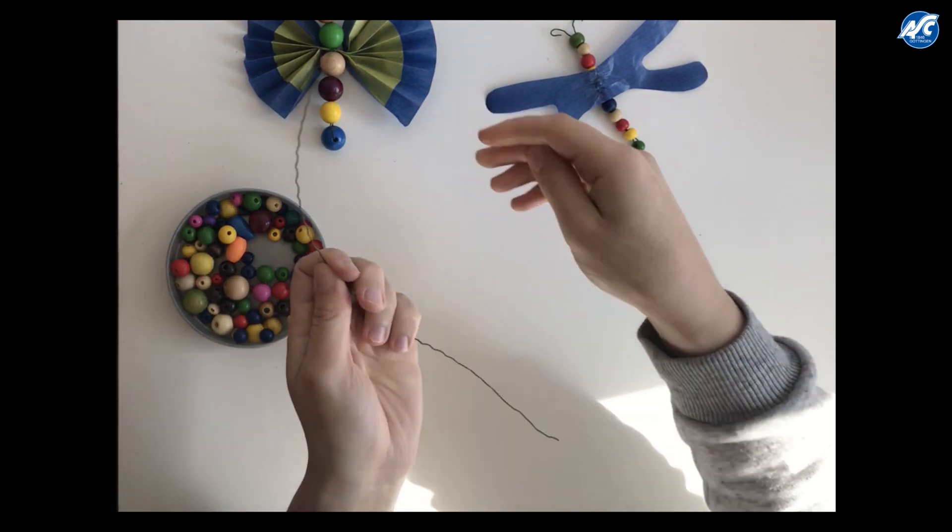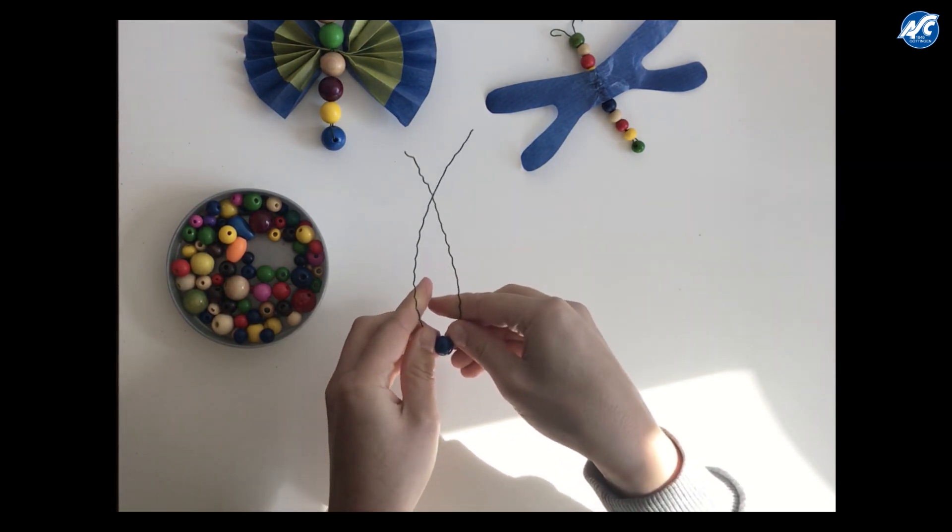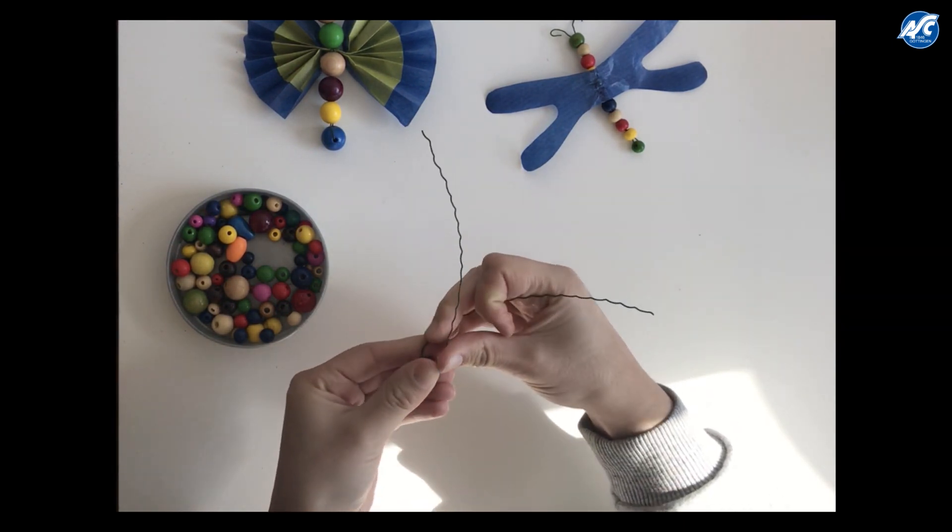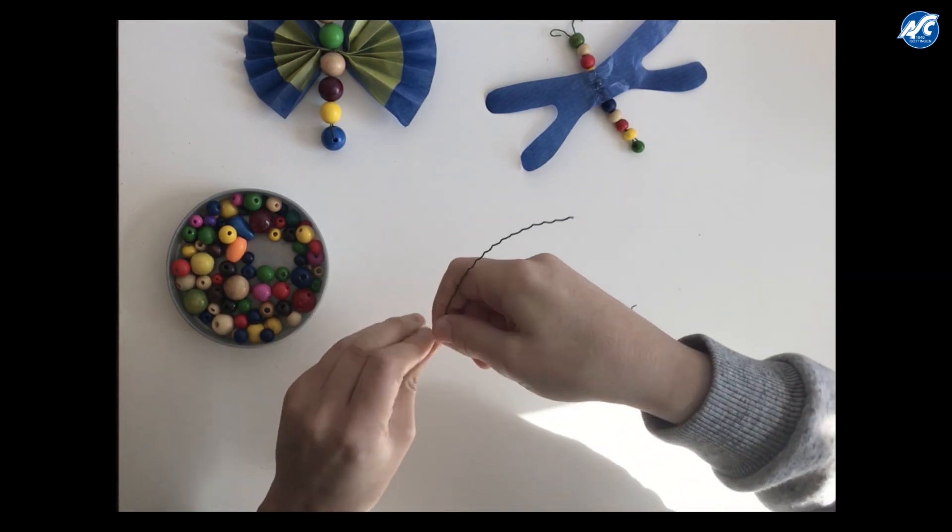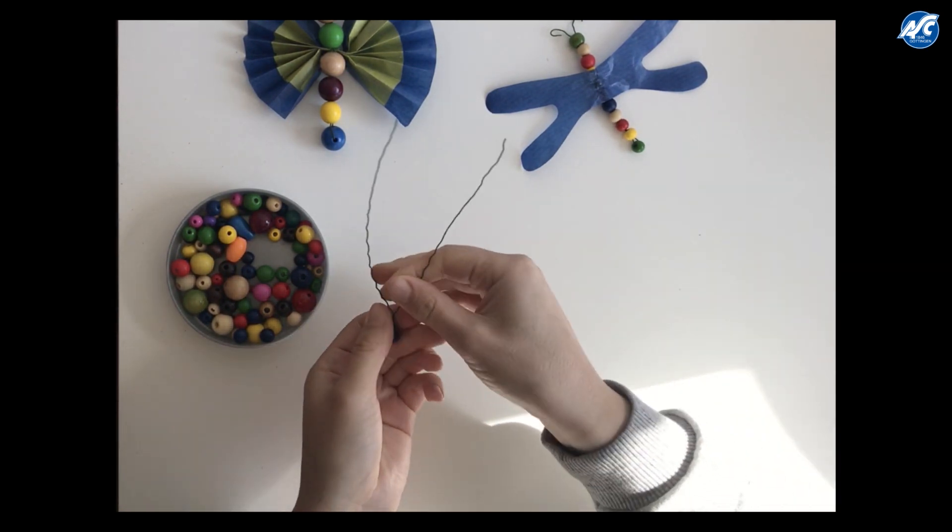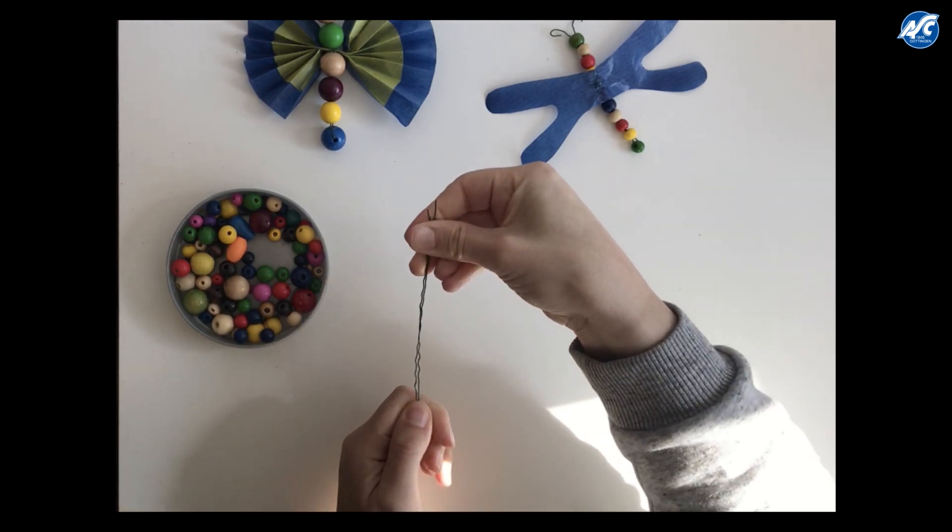You pull it over until it's here in the middle and then you have to bend it all up. Of course you can ask your parents or any other adult for help. That's not a problem. Then you twist it a little bit. So it's down here and then you put these two together.